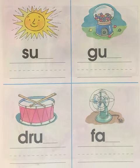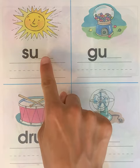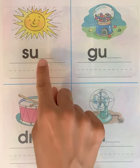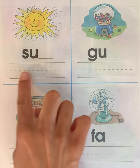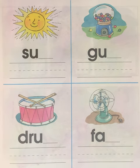Hello everyone. Welcome to Numbers and Colors. Today we are going to write the letter M or the letter N to the end of the word. Then we will write the word on the line. Please make sure to like this video and subscribe to the channel. Thank you.